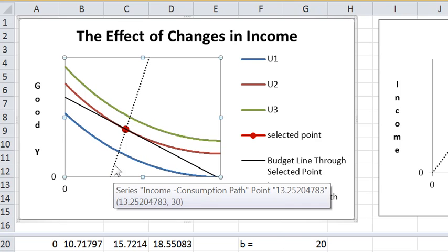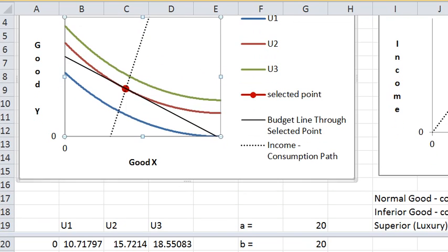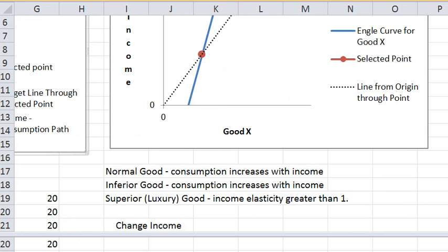If an increase in income raises the consumption of a good, the good is called normal. Let's see if we have that down here. So we have, I'm bringing that into play. A normal good is one where consumption increases with income.